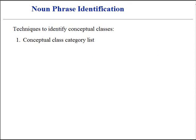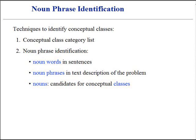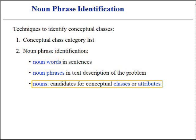Another useful technique to identify conceptual classes comes from linguistic analysis. We can identify noun words in sentences, or we can identify noun phrases in a text description of the problem domain. The nouns are considered as candidates for conceptual classes or class attributes. A certain care must be applied when using this method, since just mechanical noun-to-class mapping isn't possible, as words in natural languages are ambiguous. Nevertheless, it is another source of inspiration for a designer.